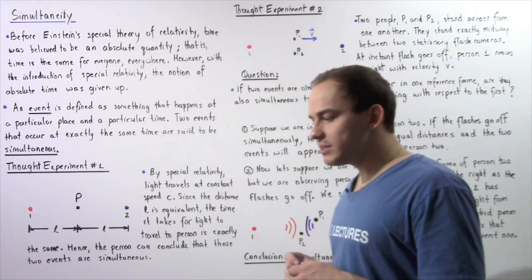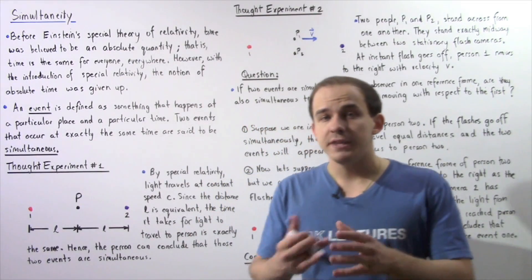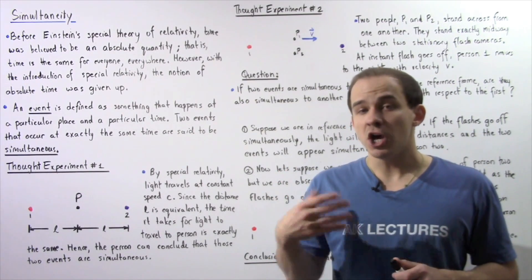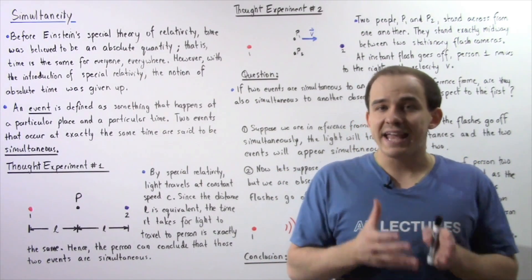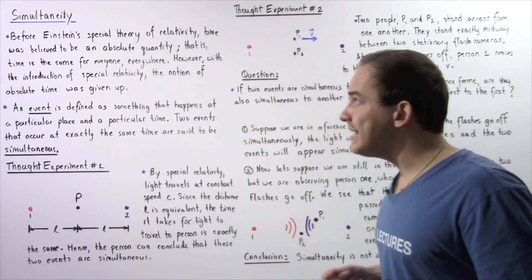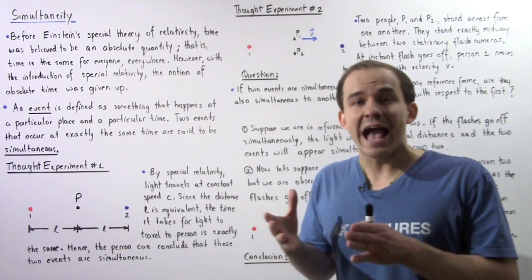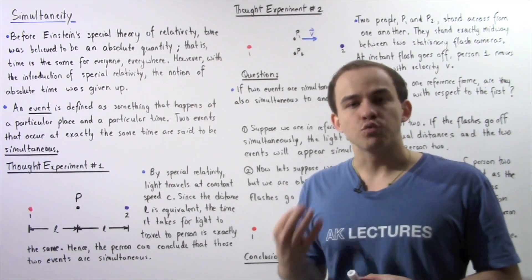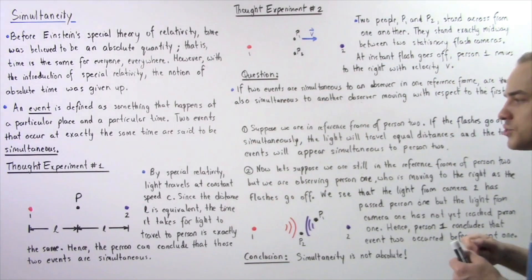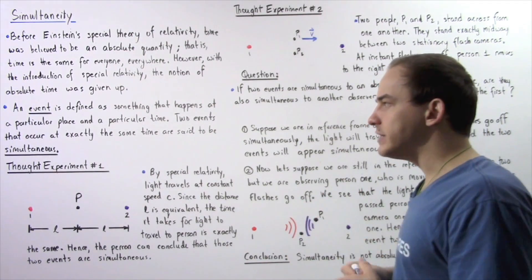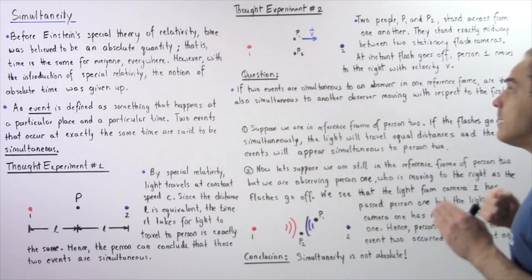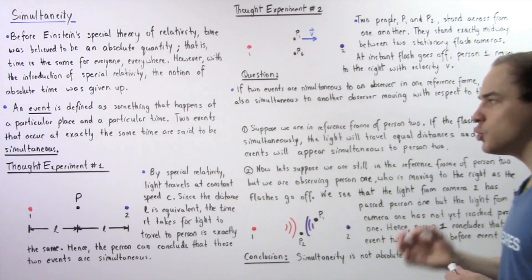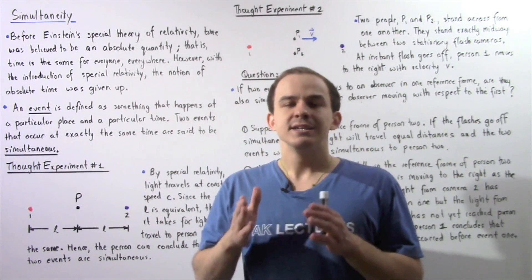So even though to person two the two events seem to take place simultaneously, to person one event number two seems to take place before event number one. Which one of these two people is actually correct? The answer is they're both correct — there is no single correct answer because simultaneity is a relative concept. Absolute time does not actually exist; time is itself a relative concept. To one person the two events seem simultaneous, but to the second person, due to relative motion, those two events do not seem to take place simultaneously.